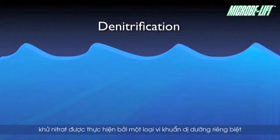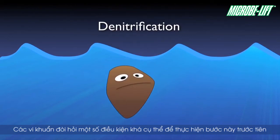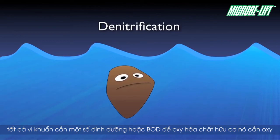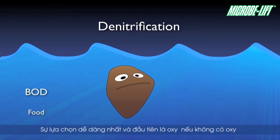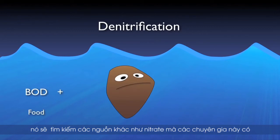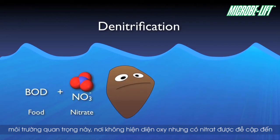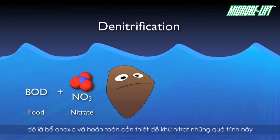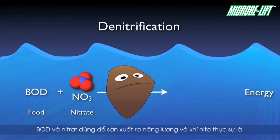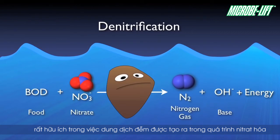Denitrification is performed by specialized heterotrophic bacteria. These organisms require specific conditions: they need some food, or BOD. In order to oxidize that food, they need oxygen. Their first choice is dissolved oxygen. If there is no DO present, however, they look to alternative sources such as nitrate. These specialists have the ability to strip the oxygen from nitrate molecules to satisfy their needs. This critical environment where DO is not present yet nitrates are is referred to as anoxic, and is absolutely required for denitrification. These bugs take the BOD and nitrate to produce energy, base, and nitrogen gas. The base is actually very useful in buffering the acid produced during nitrification.